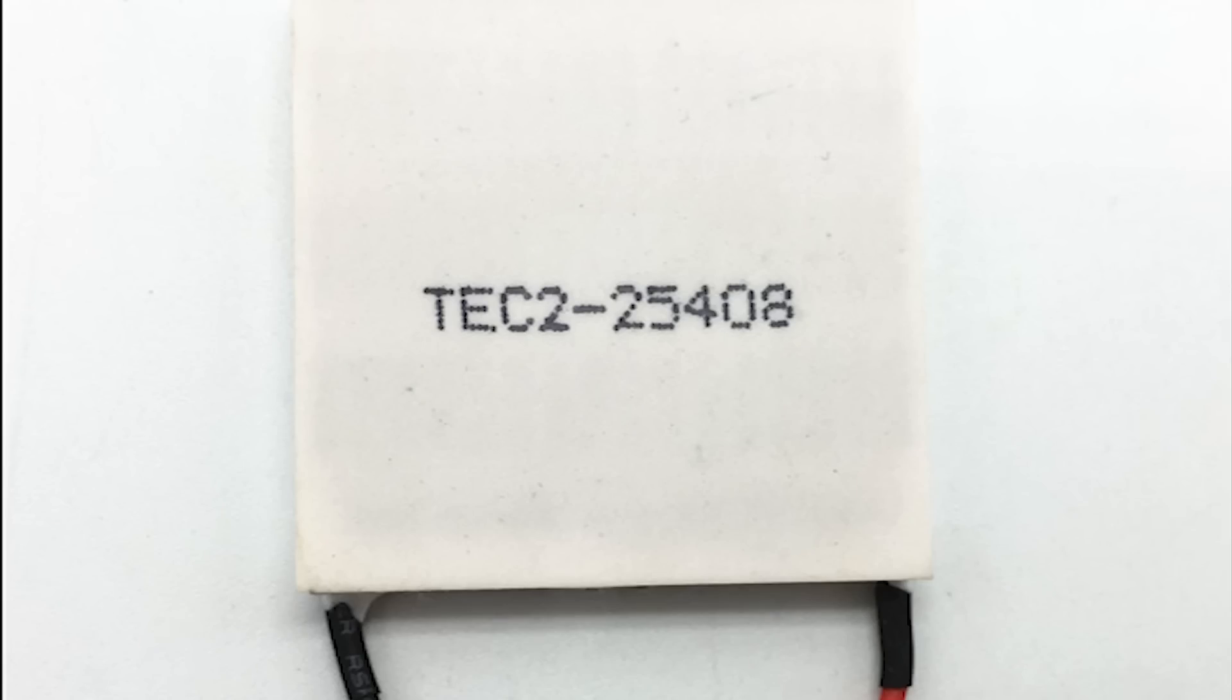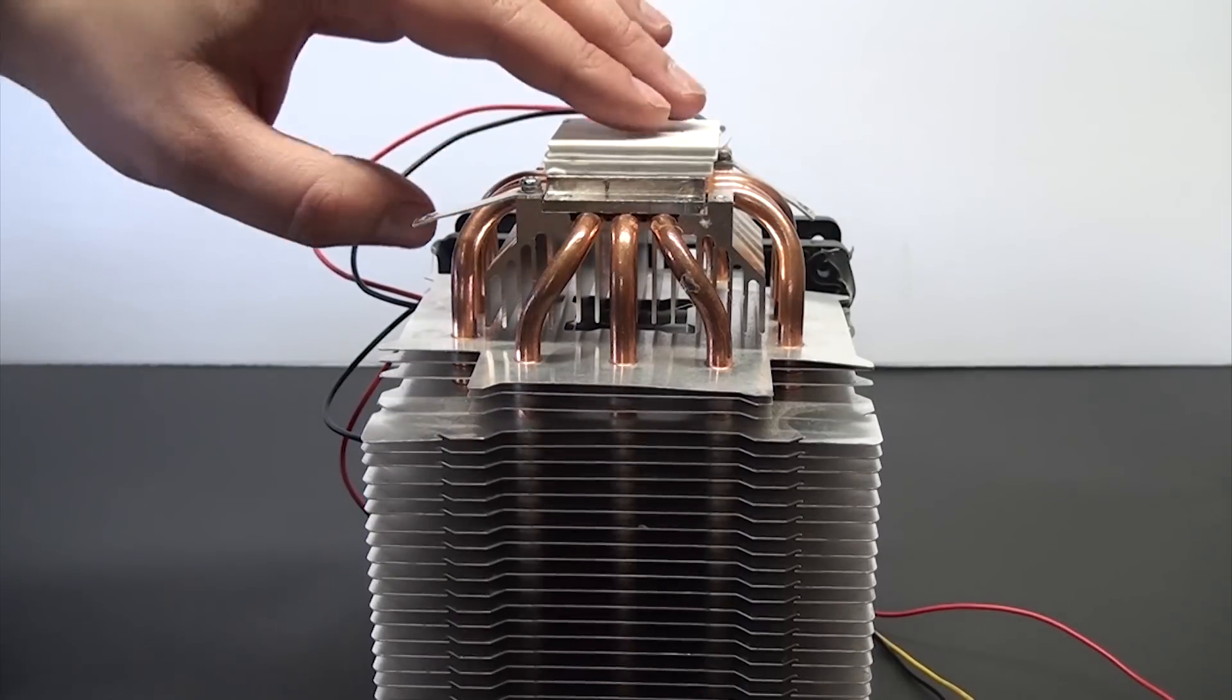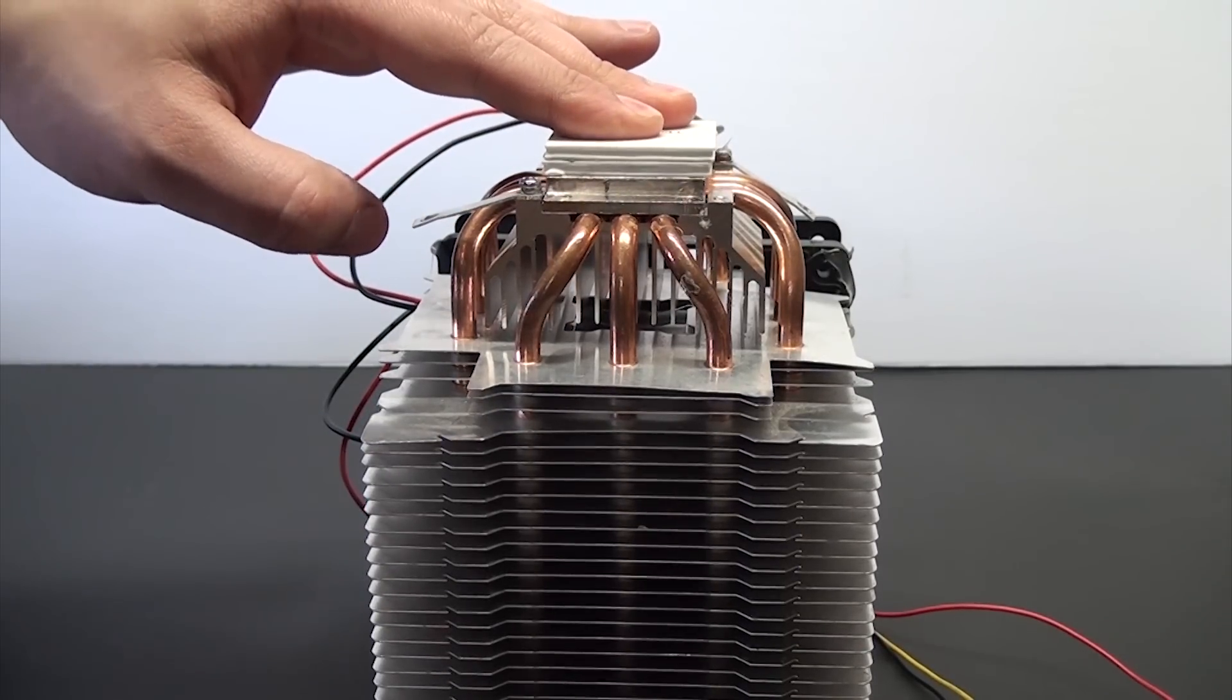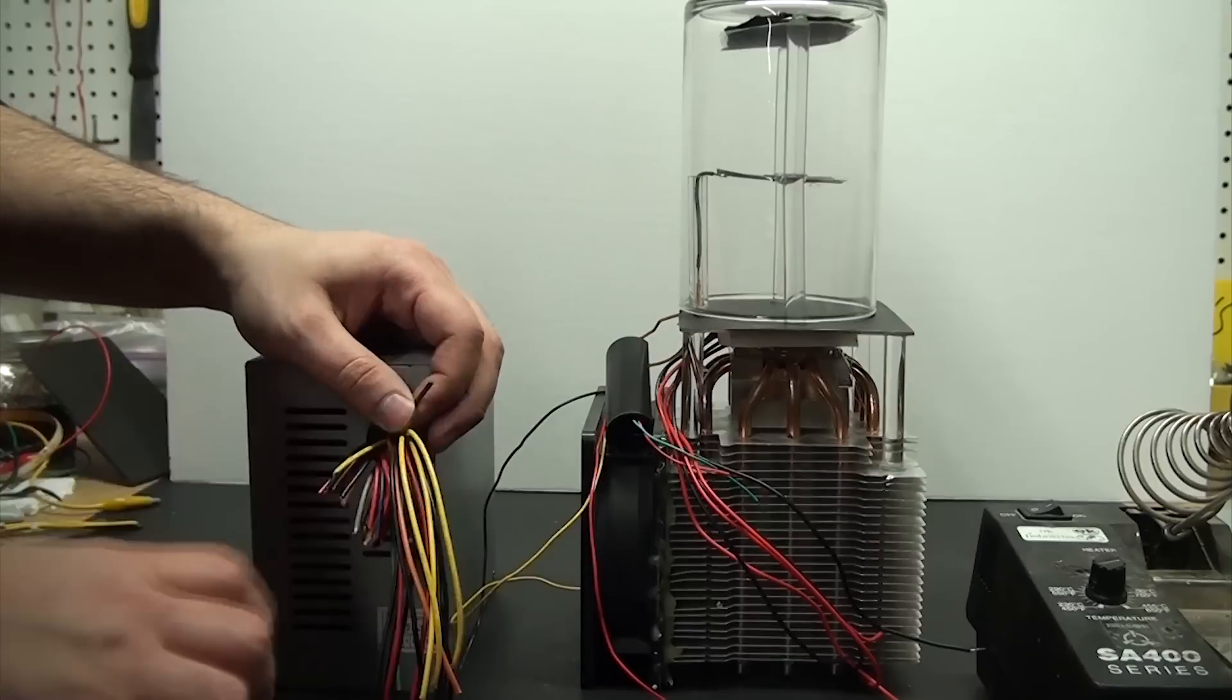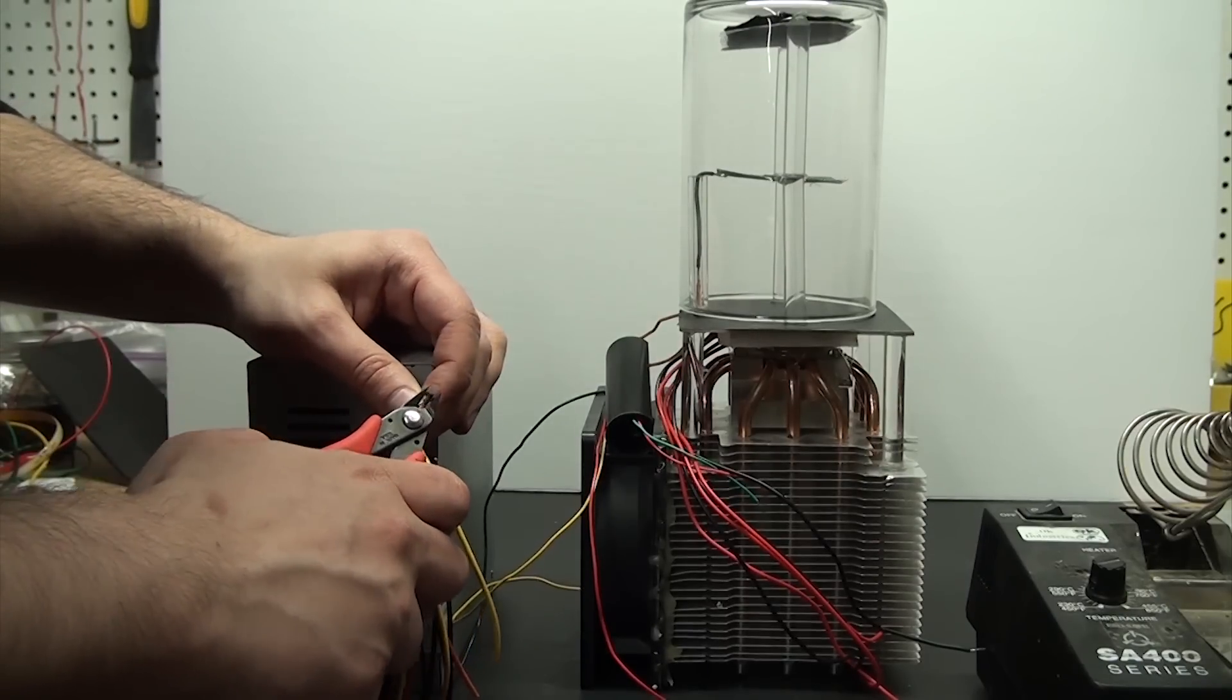The best option is to just get a cascaded Peltier, which is actually just two that are internally stacked. And these are nice because they get very, very cold and you only need to apply a single voltage to them. But I wanted to use what I could quickly get off Amazon, so I didn't have to wait for a cascaded one from China. I ended up using a stack of three to get my setup down to temp stably.